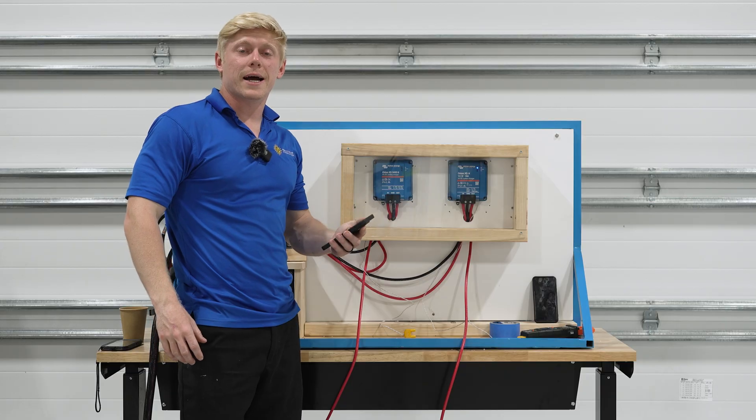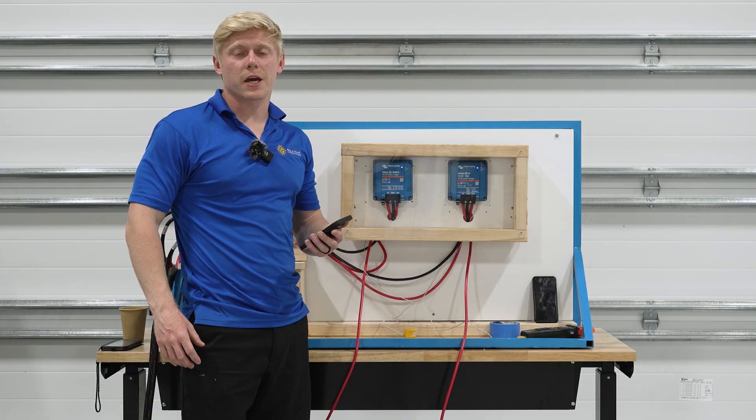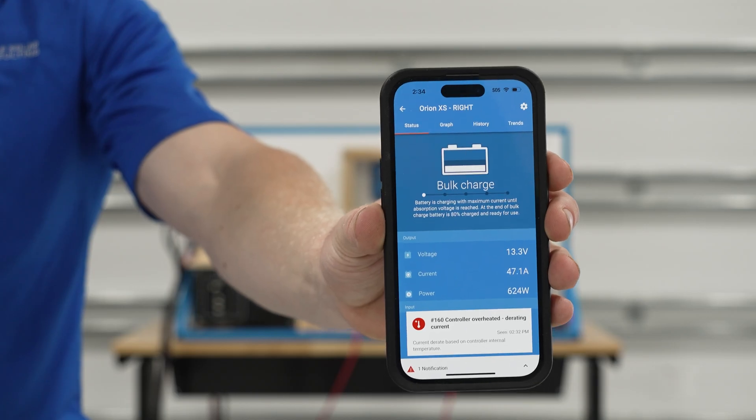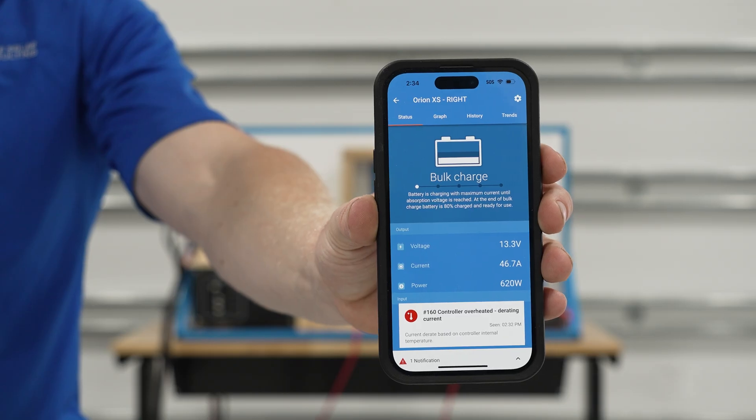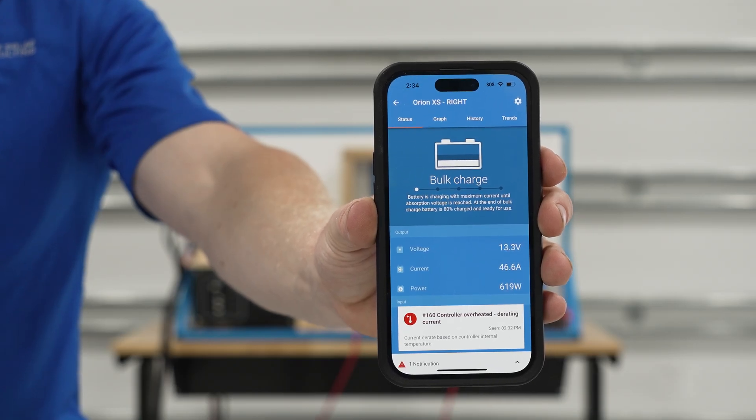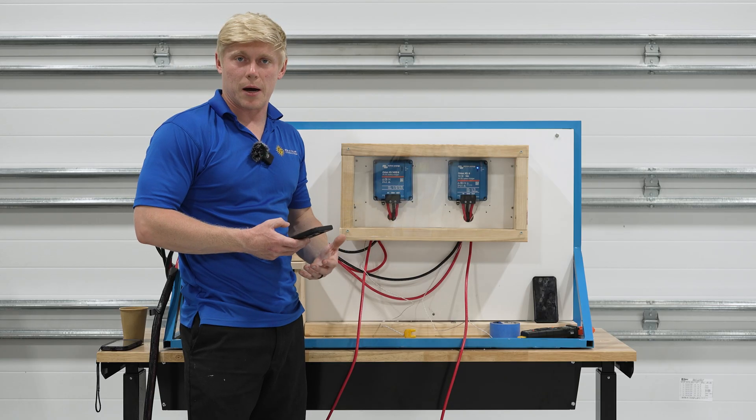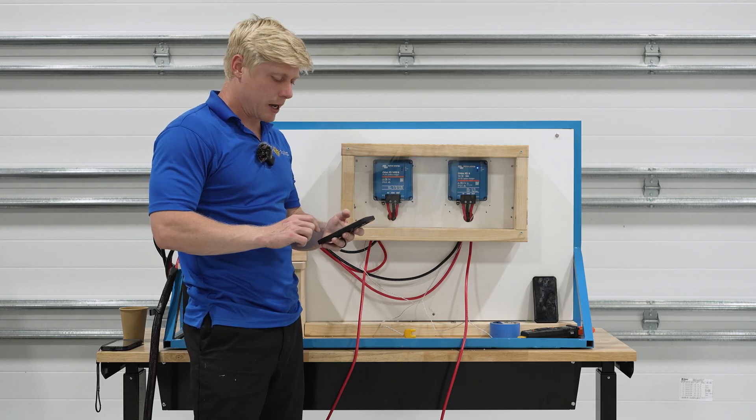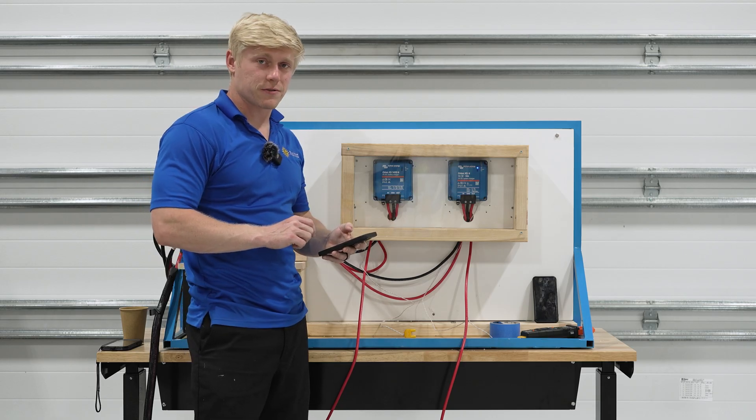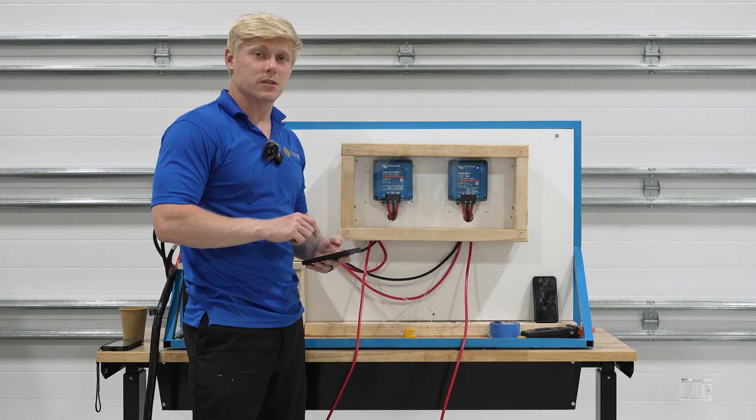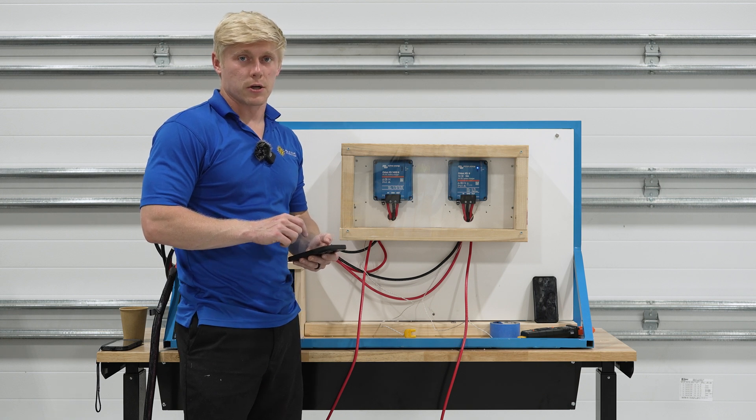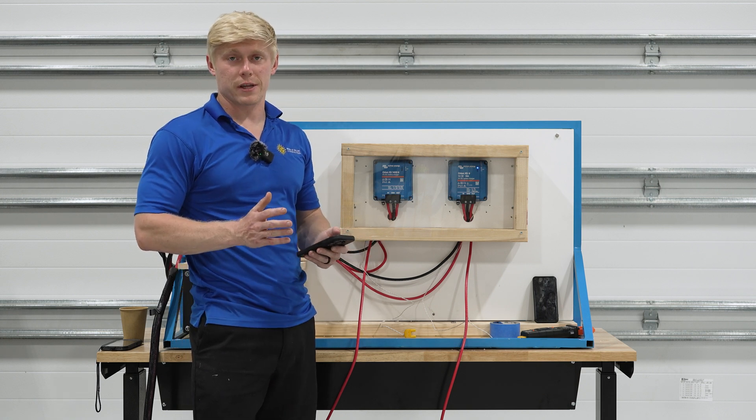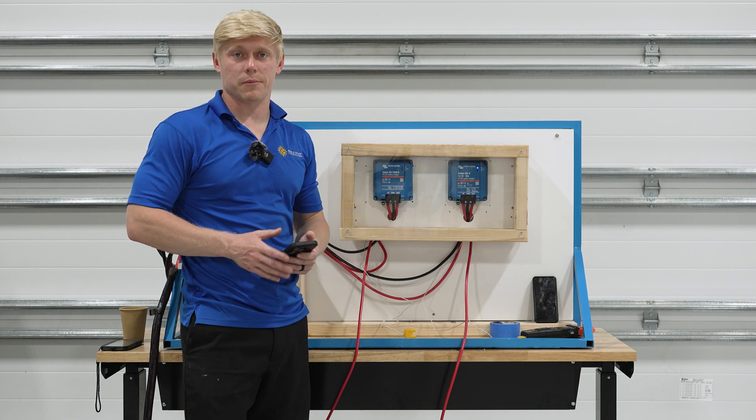All right, we are 90 minutes in and we just got a notification on Victron Connect that the Orion XS is derating its current, so it's reducing the power output to stop overheating. Right now it is at 200 degrees Fahrenheit and we're getting 46 amps of output, so still pretty good considering that it is almost at the boiling temperature of water.